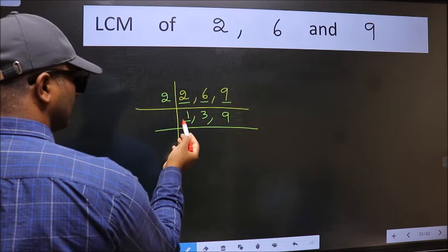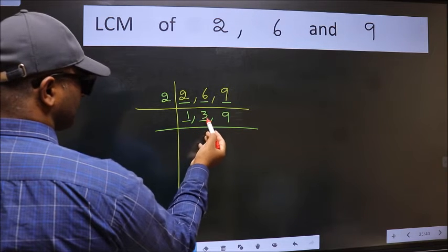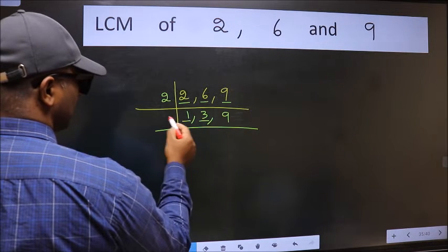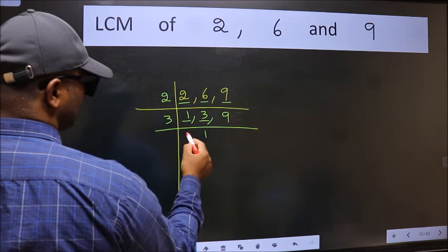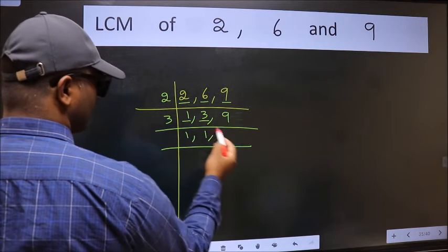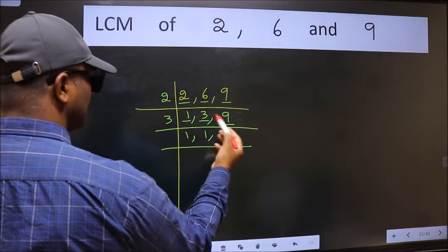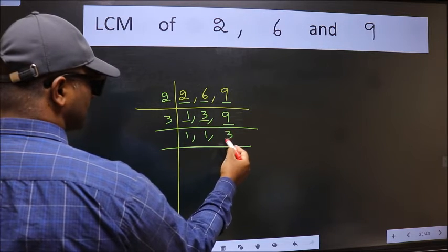Now we got 1 here, so focus on the next number 3. 3 is a prime number, so 3 divides 3. The other number 9, when do we get 9 in 3 table? 3 times 3 is 9.